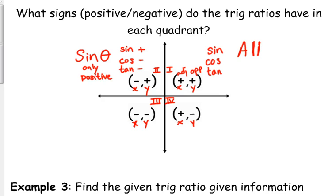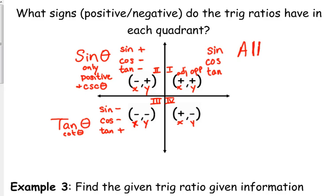All the others are negative. Now if you want to include the reciprocal ratios, the reciprocal of sine is the only positive one, so technically it's sine and cosecant. But cosine, tangent, secant, and cotangent are all negative. Third quadrant: sine is y over the hypotenuse, so it's negative over positive — sine is negative. Cosine is x over the hypotenuse, negative over positive — also negative. Tangent is y over x, so negative divided by negative is positive. So in the third quadrant, tangent and cotangent are the only positive ones.